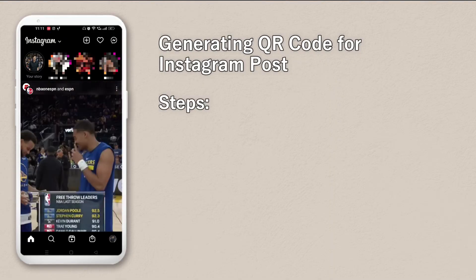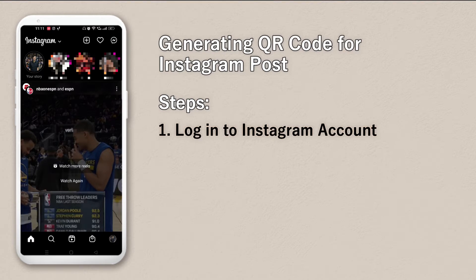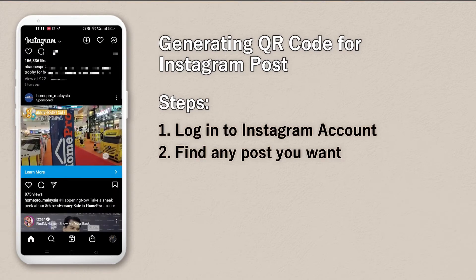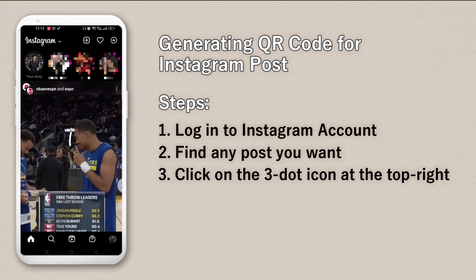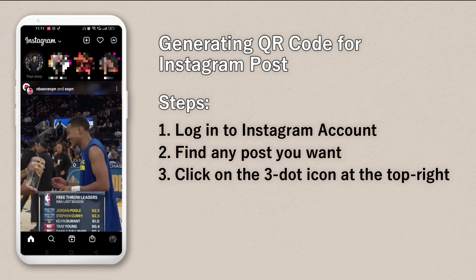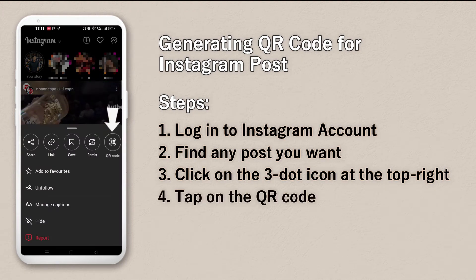Right now you are in the Instagram account — you can see I'm logged into Instagram. Find any post that you like and you'll see there's a three-dot menu on the top right of the post. Just click on the three dots and you can see the QR code option on the right.